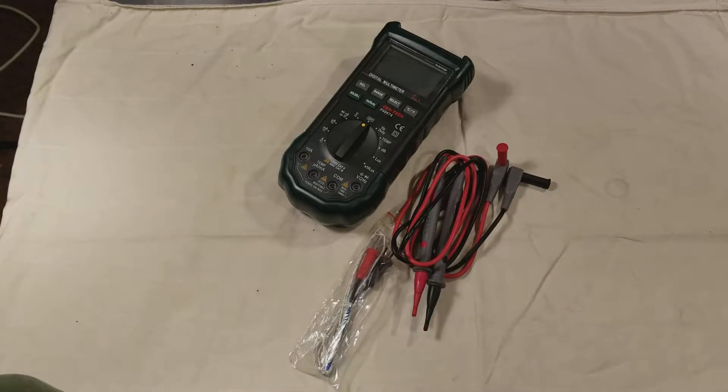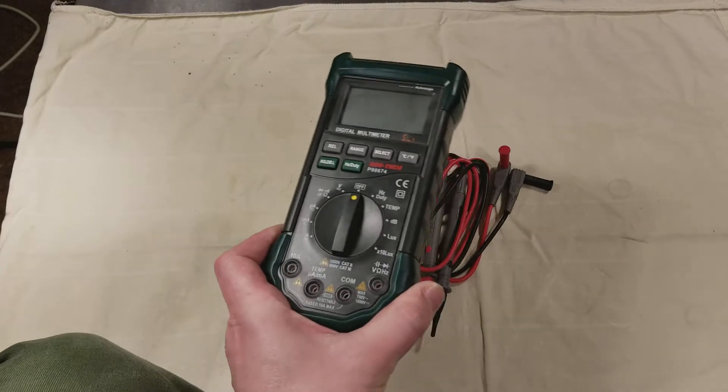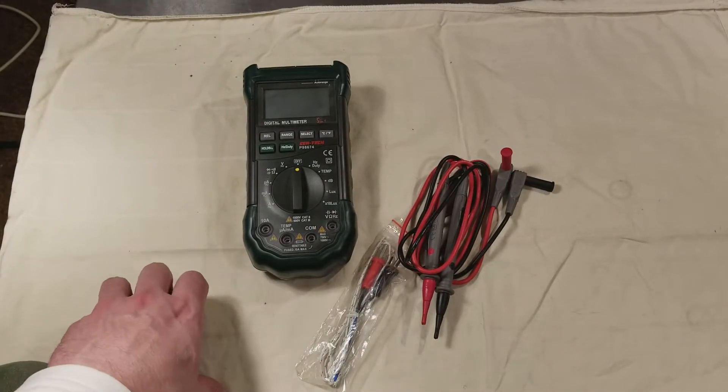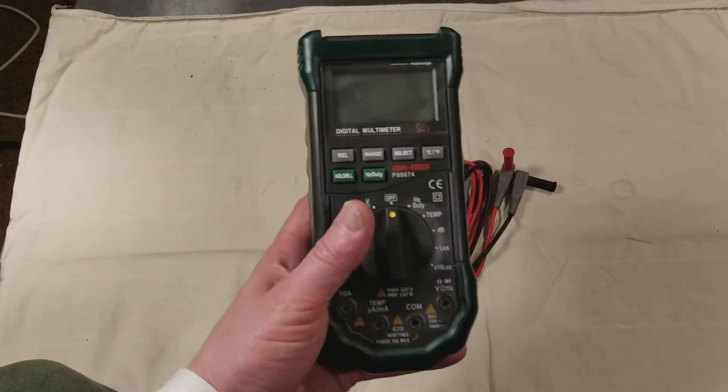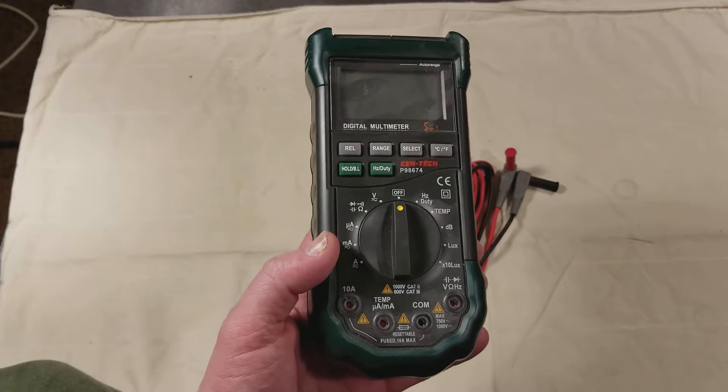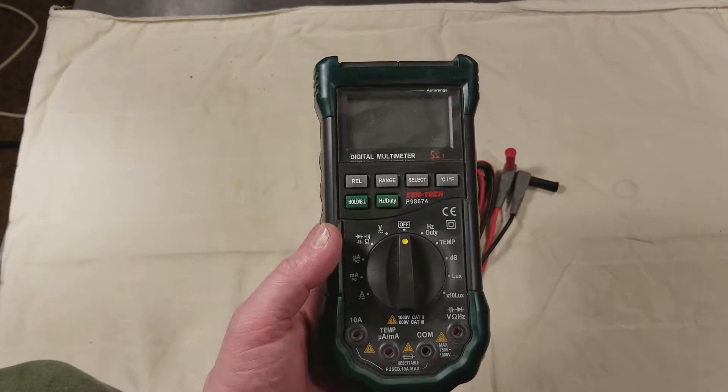Cadis Maximus here again, this time with a quick review of the Harbor Freight Centec 98674. This is their 5-in-1 multimeter, and it's the nicest multimeter that is, or I think it's still sold at Harbor Freight.